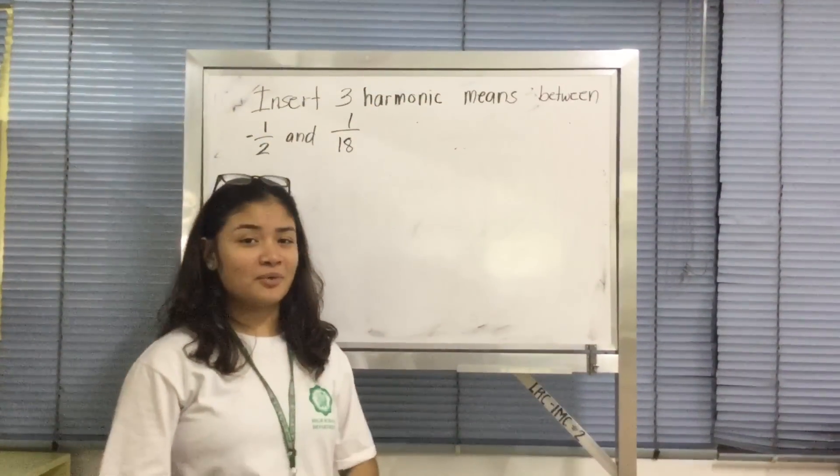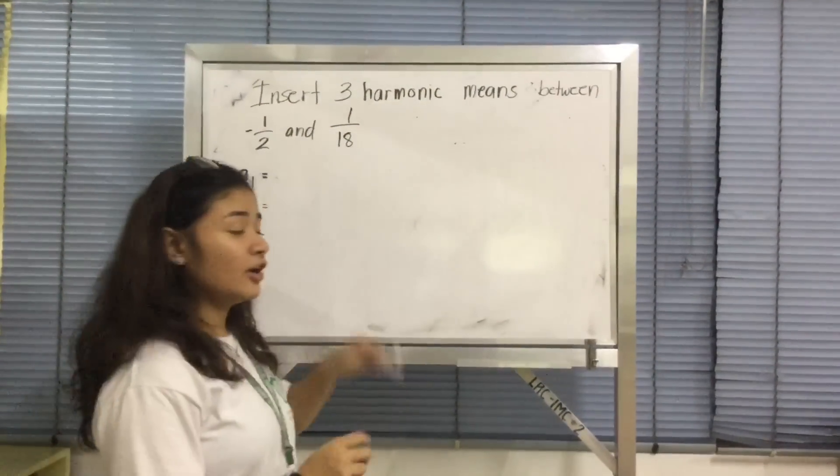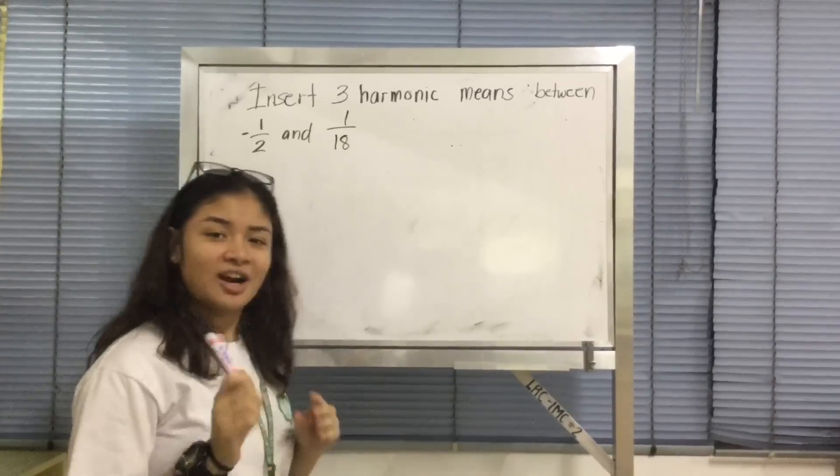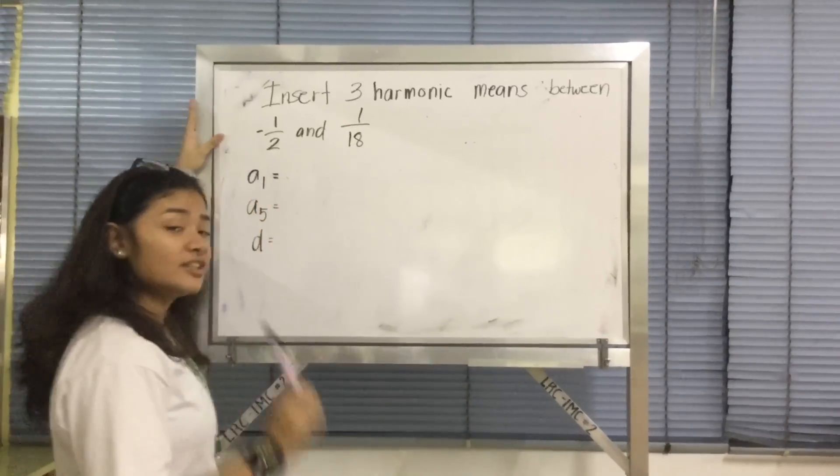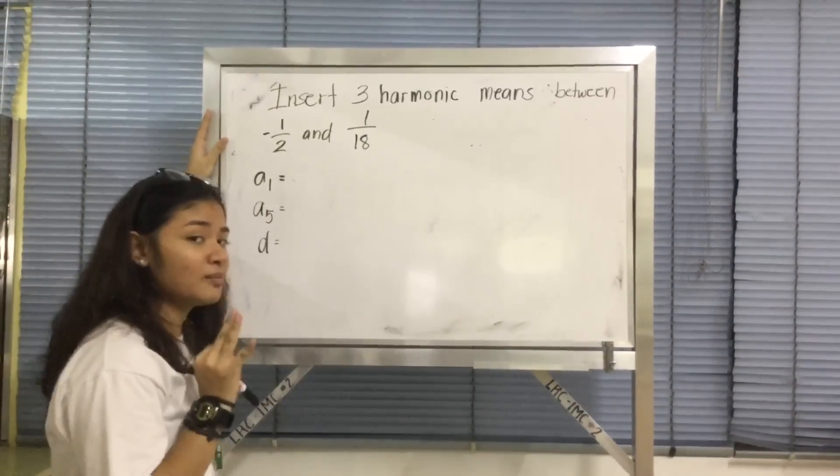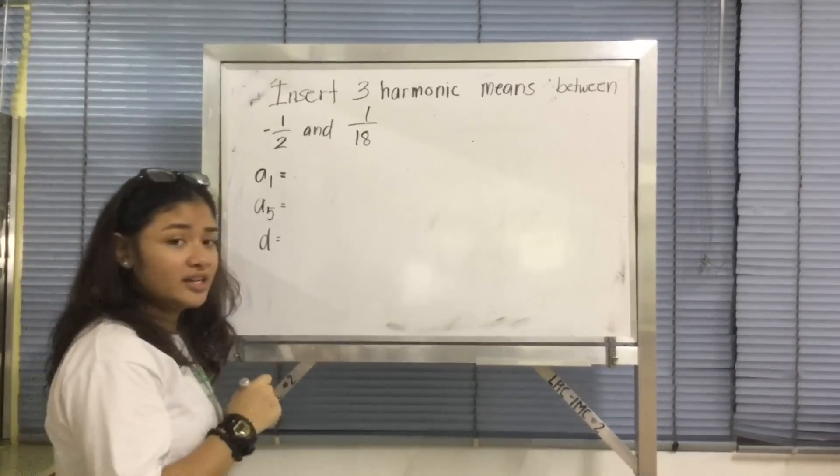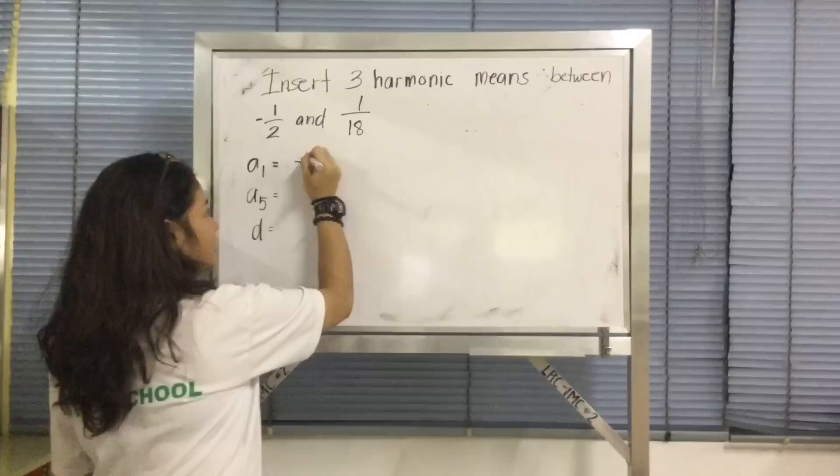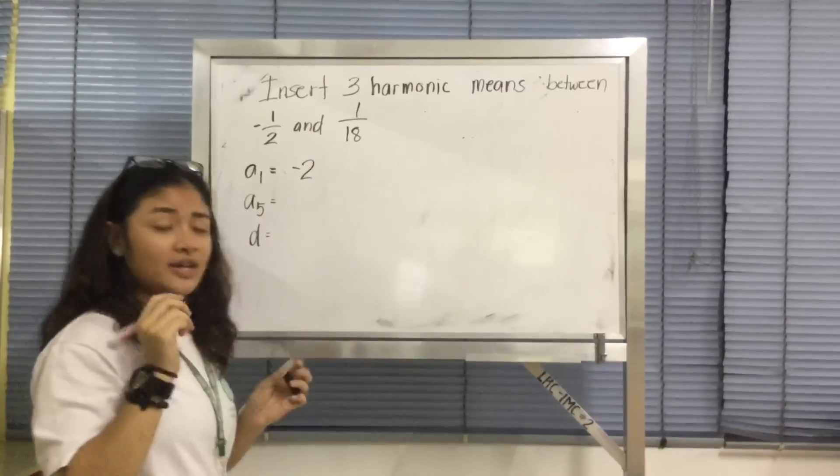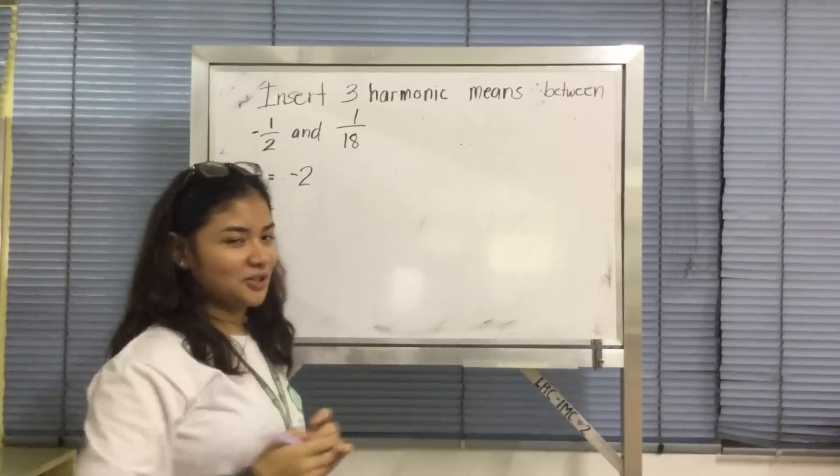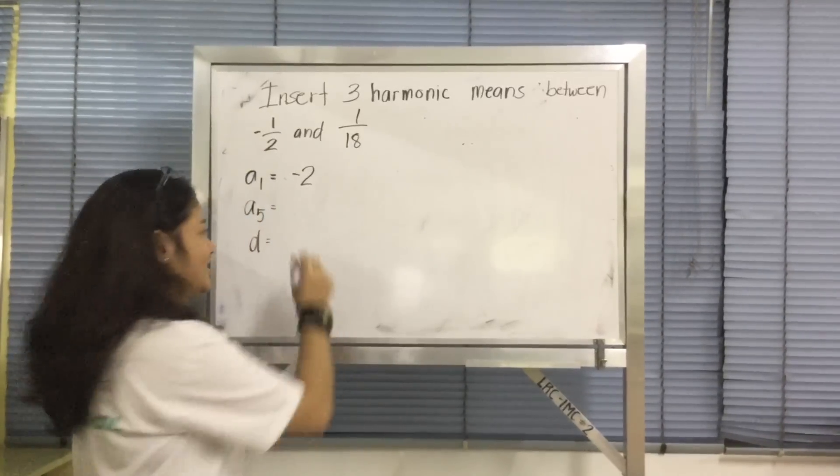So we know how to solve harmonic sequences. Now let's move on to a new topic, and that is harmonic means. Given this problem: insert 3 harmonic means between negative 1 half and 1/18. So a1 is equal to negative 2. Why? Because again, disregard the numerator.